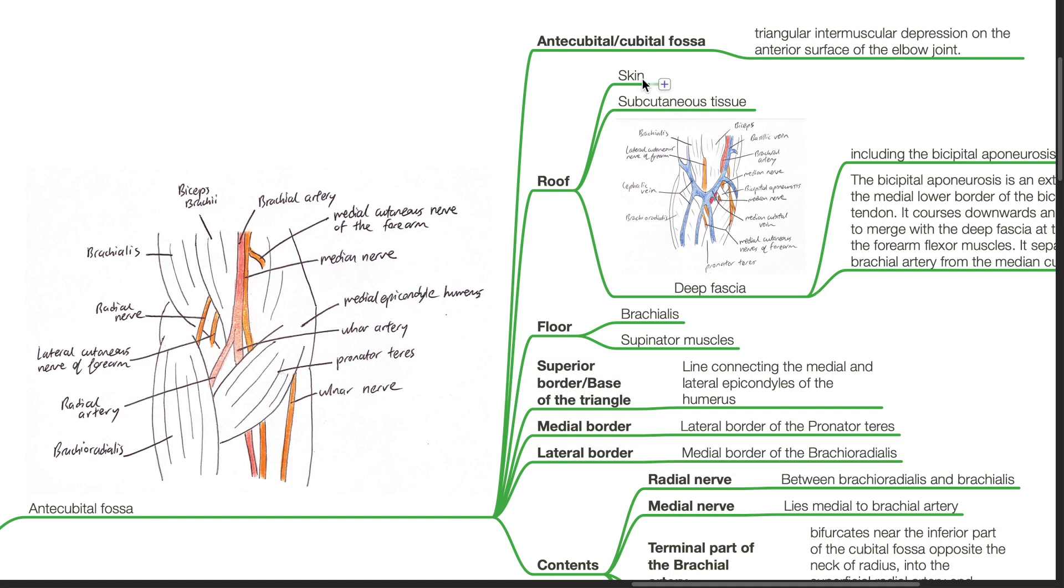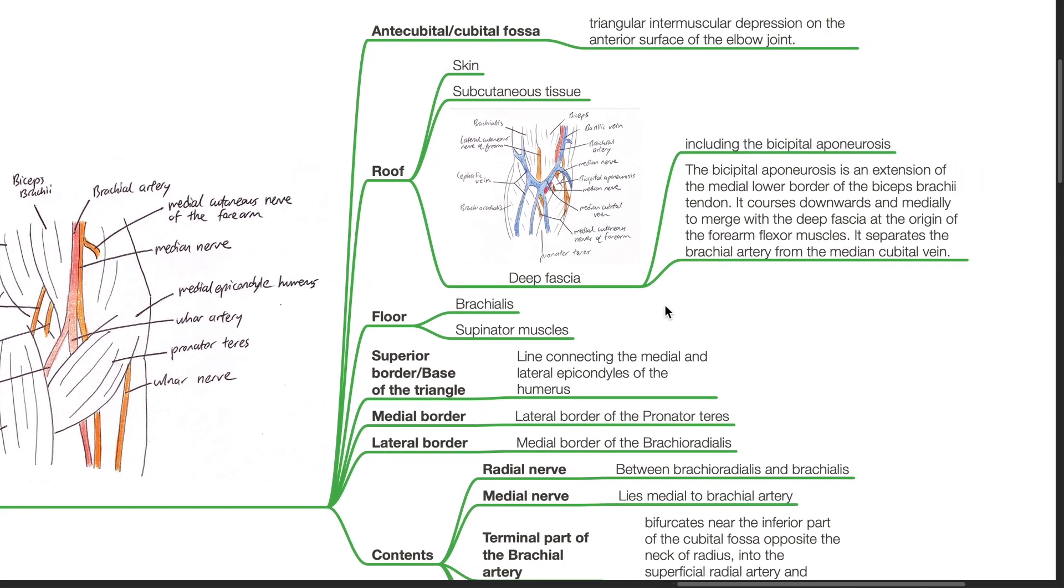The roof consists of the skin, subcutaneous tissue and deep fascia. The deep fascia includes the bicipital aponeurosis, which is an extension of the medial lower border of the biceps brachii tendon. It courses downwards and medially to merge with the deep fascia at the origin of the forearm flexor muscles and separates the brachial artery from the median cubital vein.